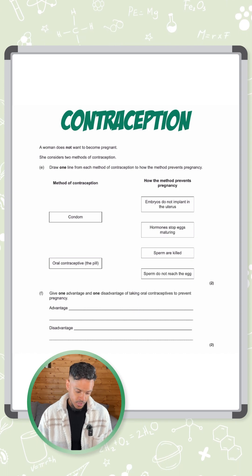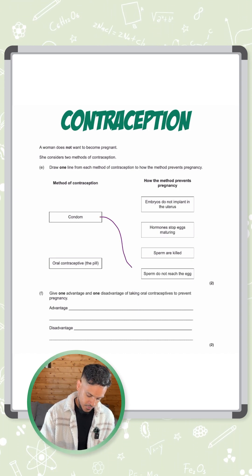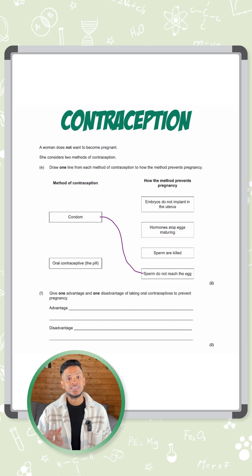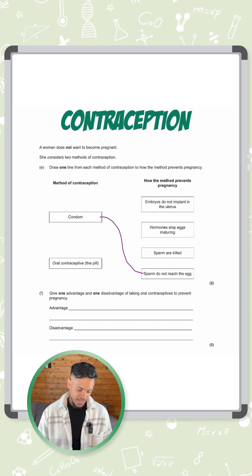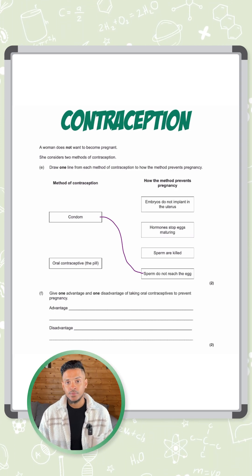So first we have a condom which basically prevents the sperm from reaching the egg because it's a barrier method, and second we have an oral contraceptive which is known as the pill.